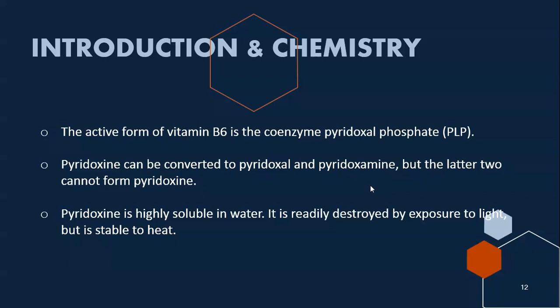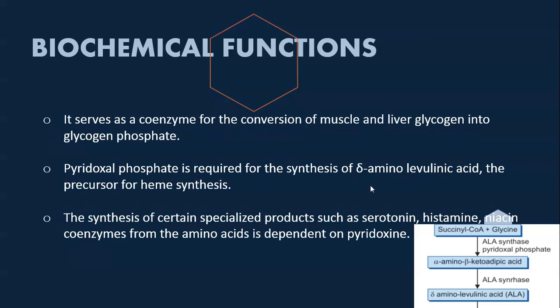Many Vitamin B complex vitamins are stable to heat but destroyed when exposed to light. The functions of Vitamin B6 include the conversion of muscle and liver glycogen into glucose-1-phosphate. Pyridoxal phosphate (PLP) is also required for the synthesis of delta-aminolevulinic acid, the precursor for heme synthesis.